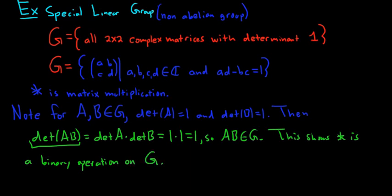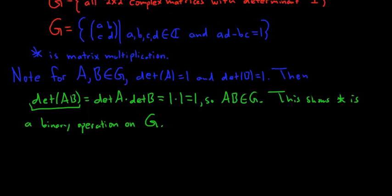Good stuff. So we have a set with a binary operation. Let's go through the three conditions for a set to be a group. One: the binary operation is associative. Two: existence of an identity element. Three: existence of inverses. Matrix multiplication is associative, so we'll take that for granted — star is associative.